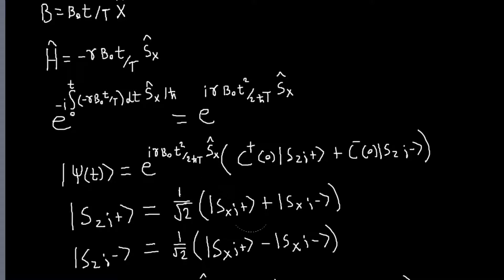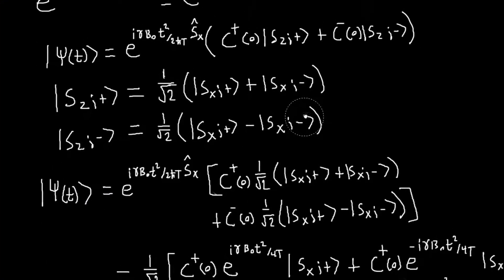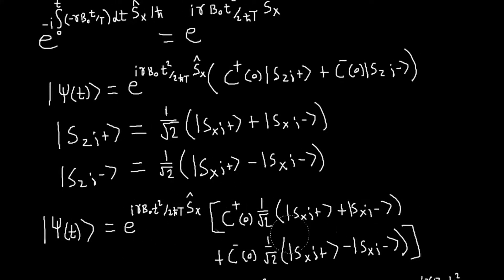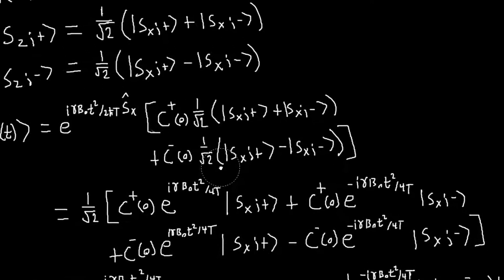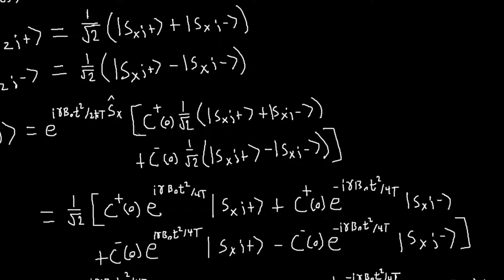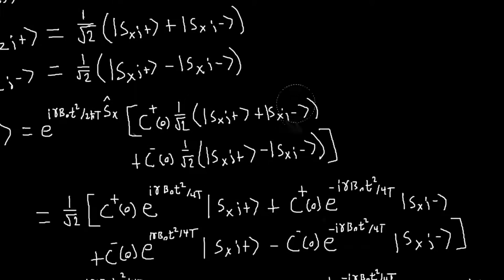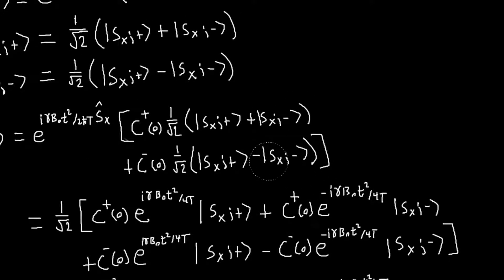That's easy enough to do. I said before what Sx-plus and Sx-minus were in terms of Sz-plus and Sz-minus. If you invert those relations, you get basically the same kind of relations for Sz-plus in terms of the Sx kets and Sz-minus in terms of the Sx kets. Using this, we can just plug these in. Then this operator acting on the Sx-plus ket will just make Sx become h-bar over two, and when I act on the Sx-minus kets, I'll get minus h-bar over two. So I just do the corresponding thing for each of these kets, and I get this.